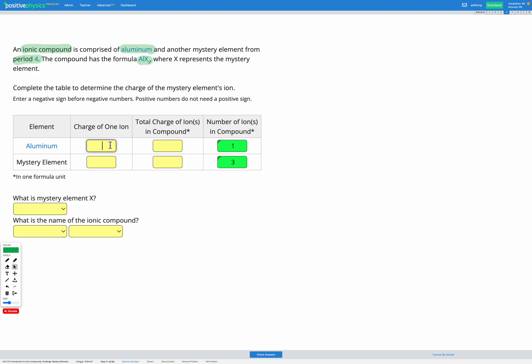Remember, we don't need a positive sign when we're typing in our numbers. We only need the negative sign for negatives. So the charge in aluminium is three plus.